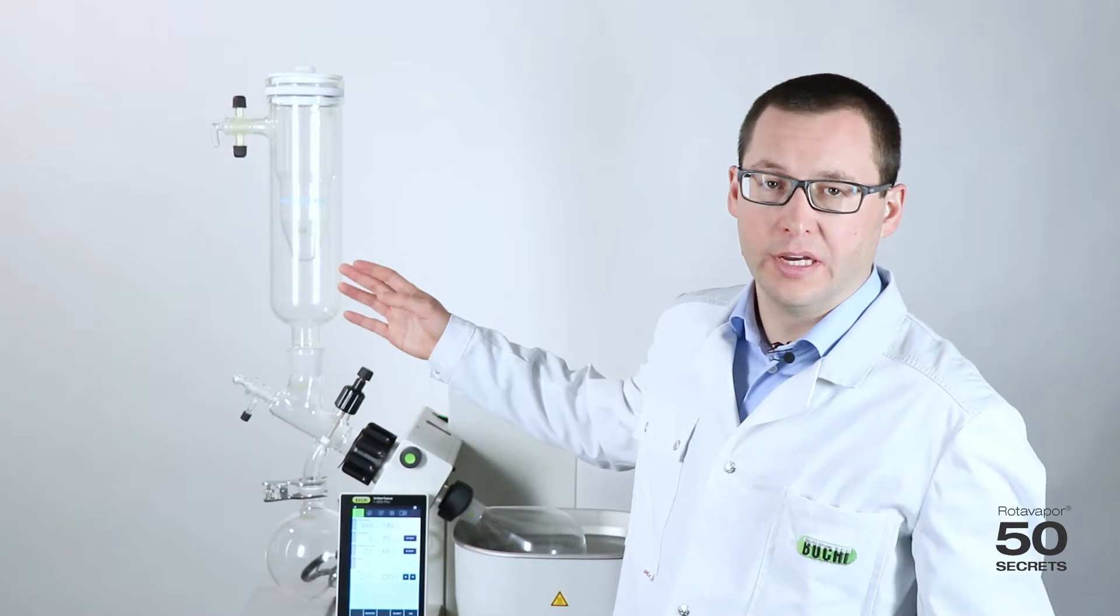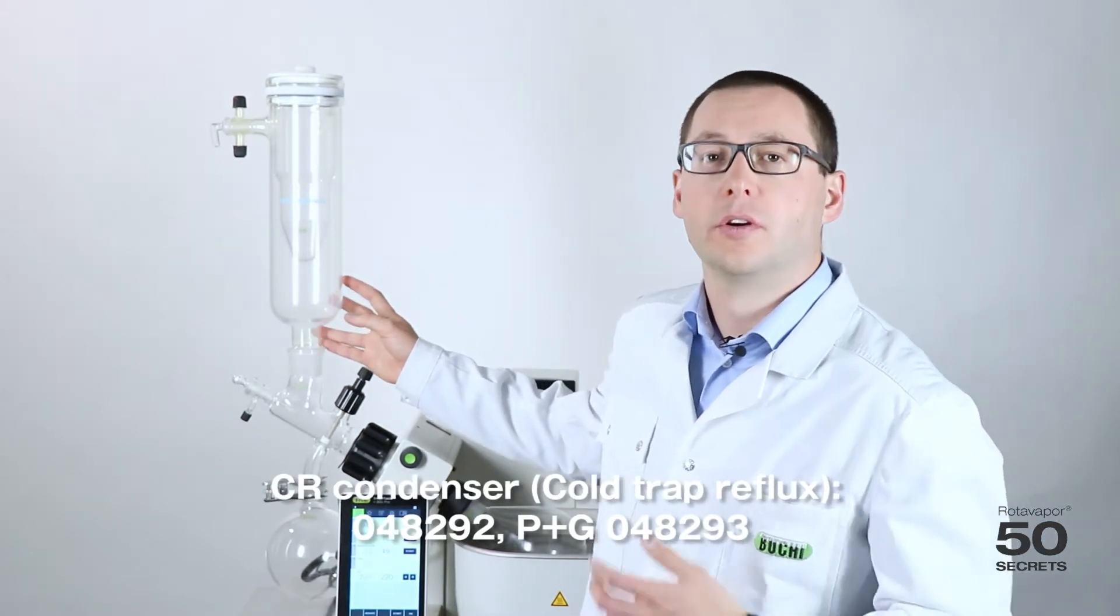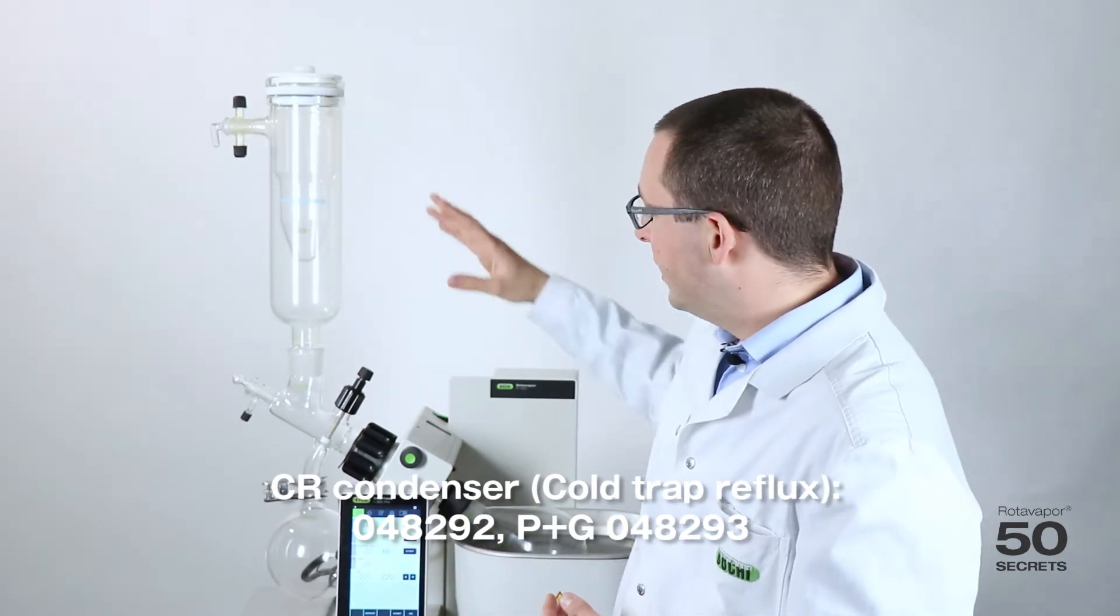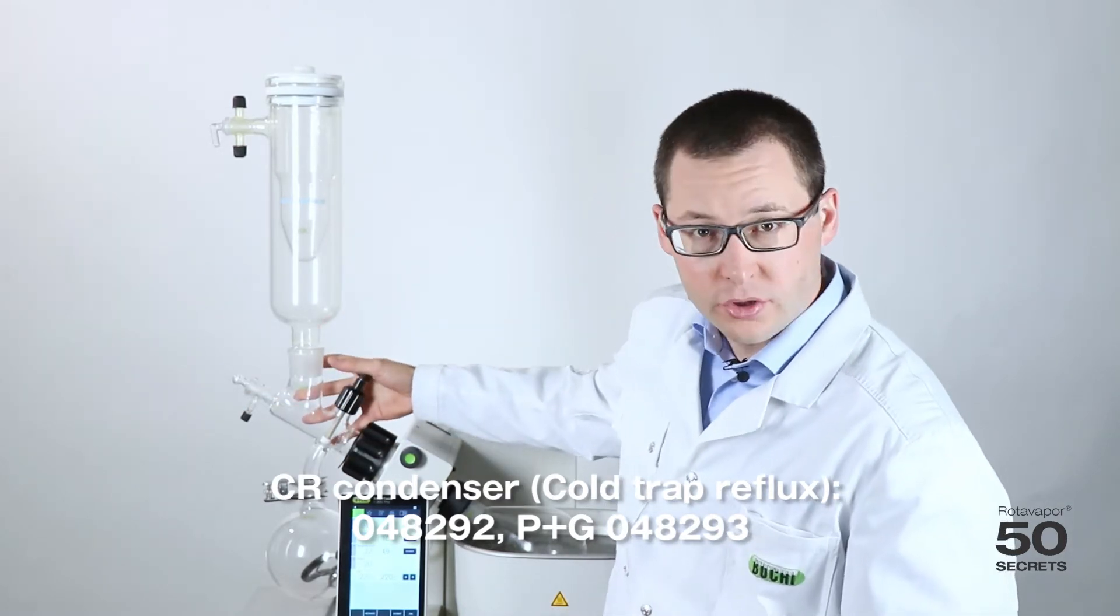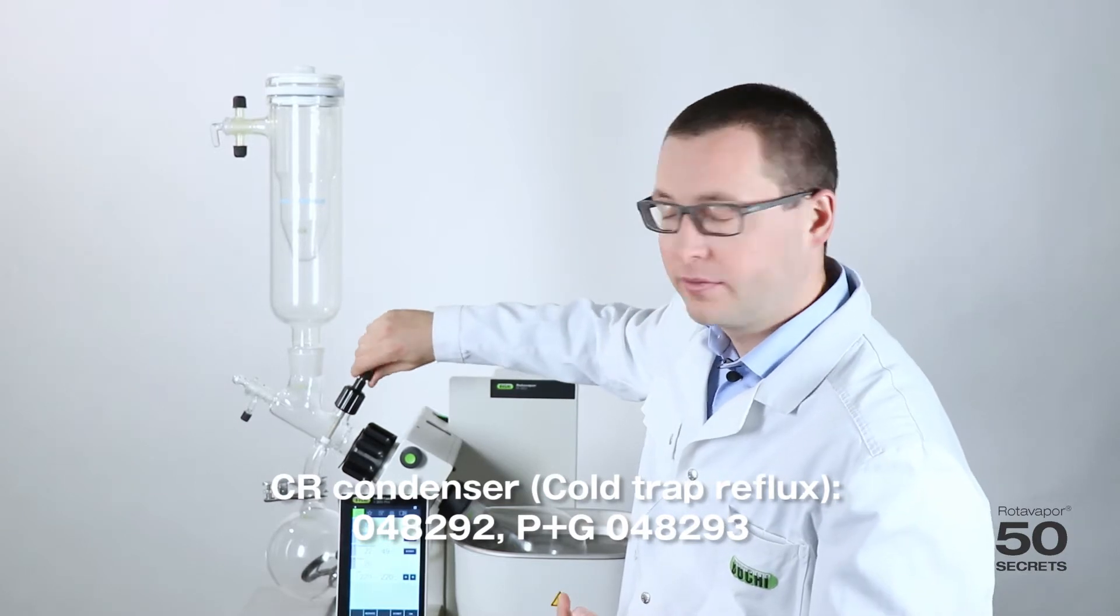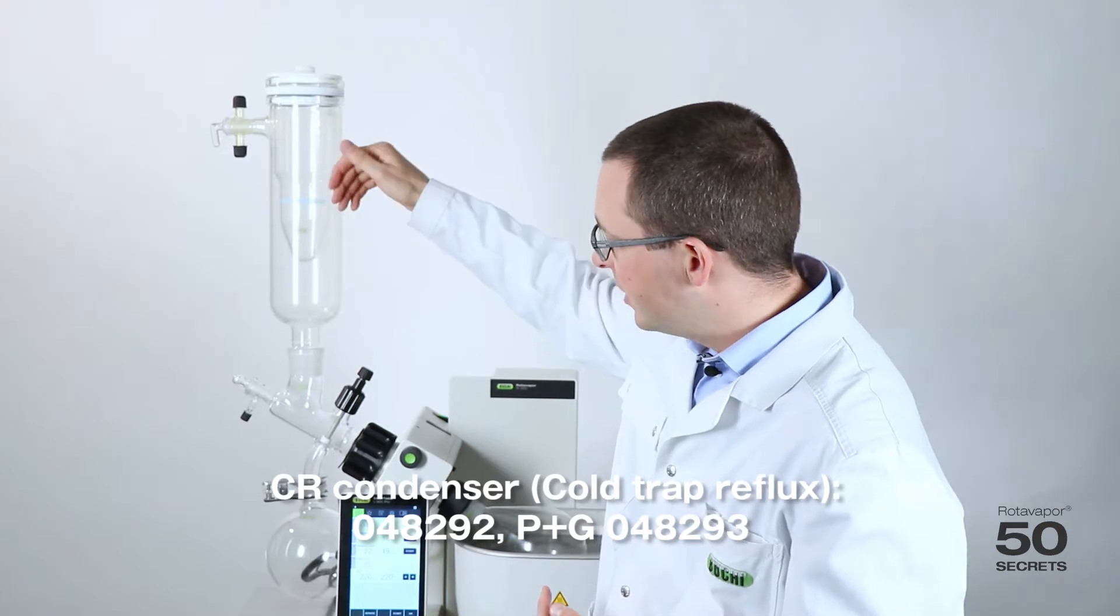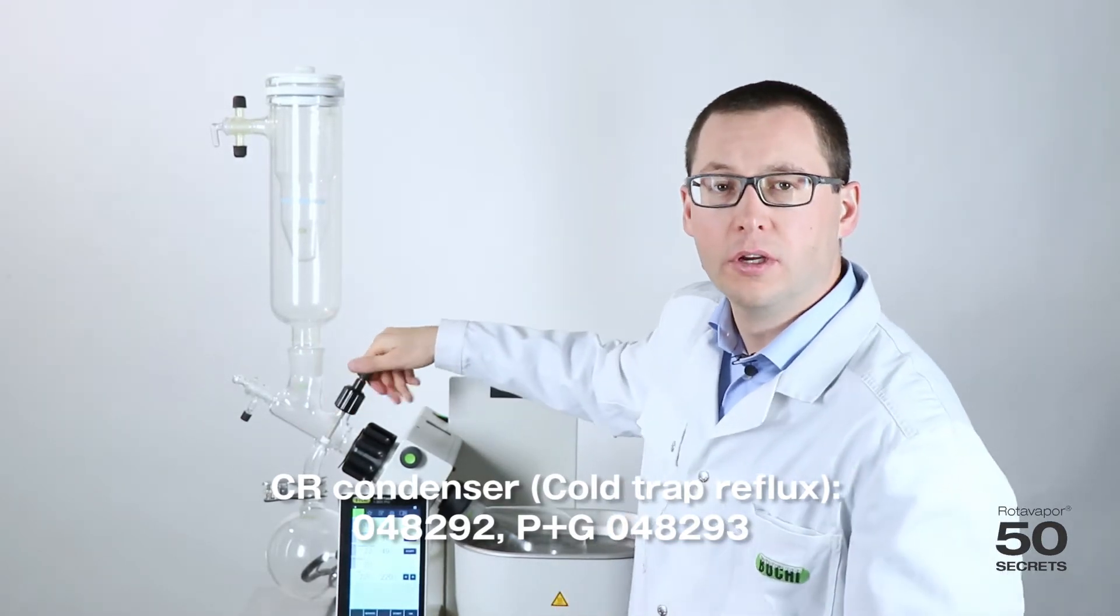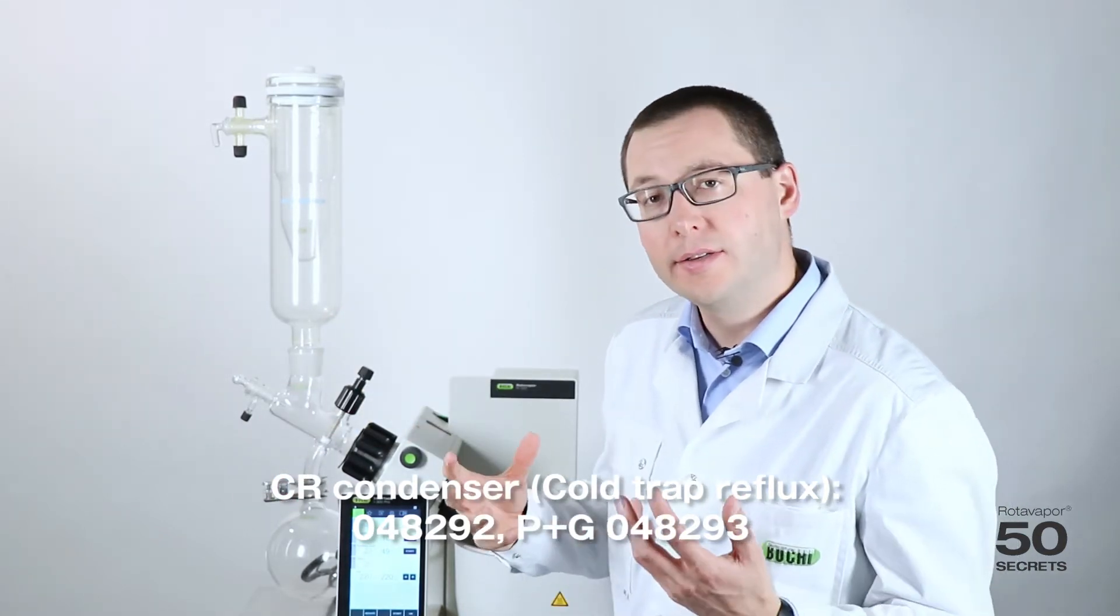This is the CR condenser. Basically very similar to the C condenser. So we can use dry ice for example to cool it. Now the difference to the C condenser is this area here. It's actually the distribution piece with its shutoff valve. So vapor flows through the vapor duct goes up here condenses and will drip down and flow back once the shutoff valve is closed. You can open it and then it will go into the receiving flask. Otherwise the concept is the same as the C condenser.